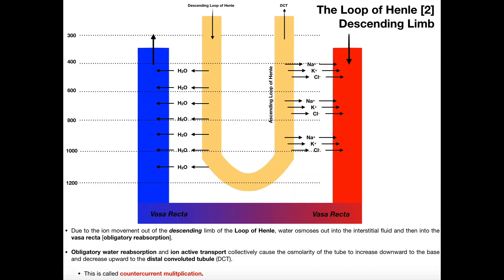In the previous video, we talked extensively about the loop of Henle — what happens in each limb of the loop of Henle — and then we defined this process as countercurrent multiplication. Remember with the loop of Henle, in the ascending limb, we have ion reabsorption into the blood, and so we reabsorb sodium, potassium, and chloride mainly.